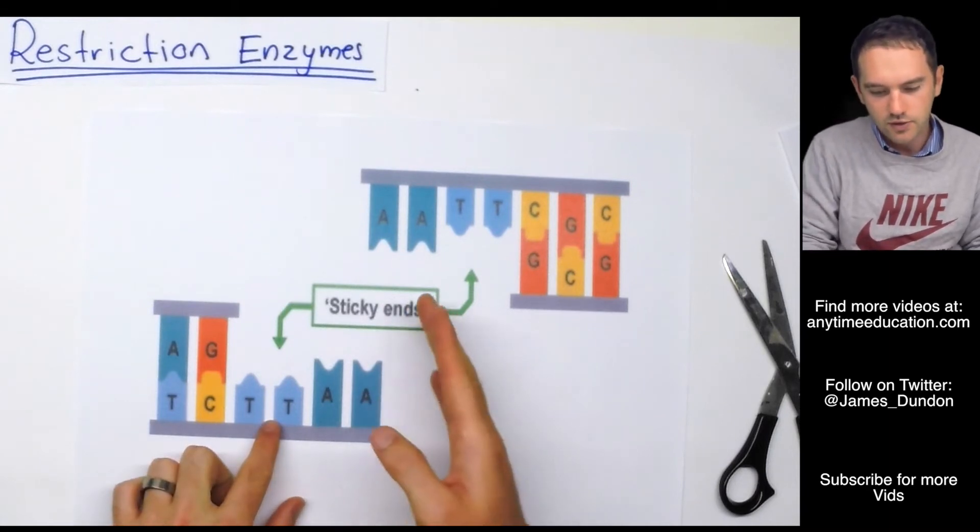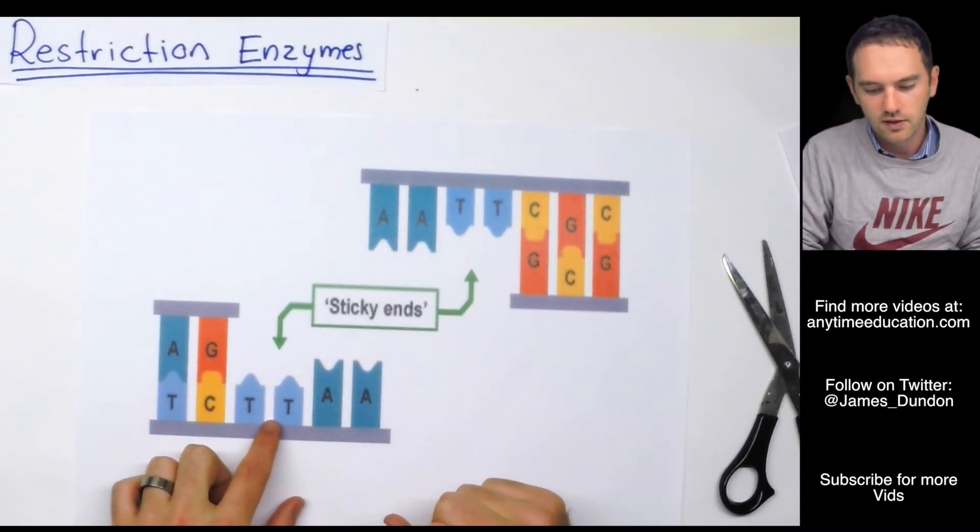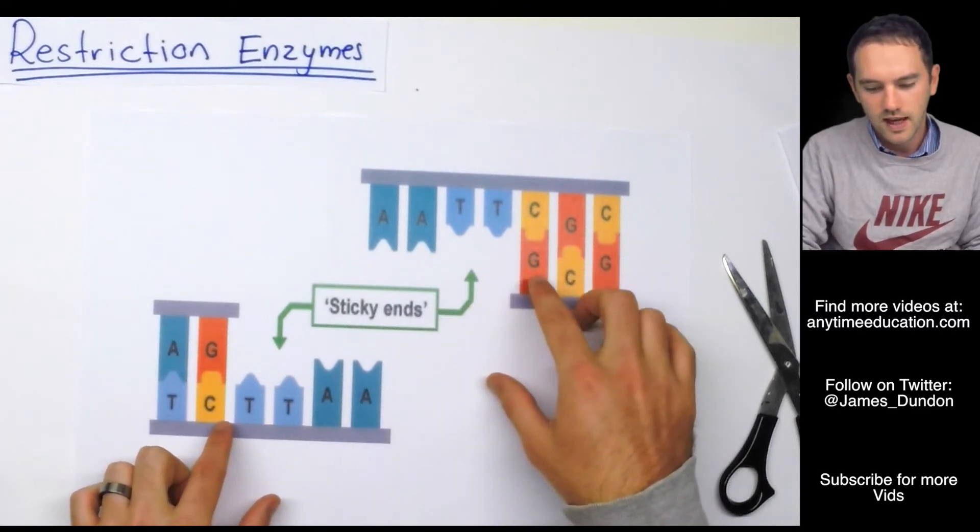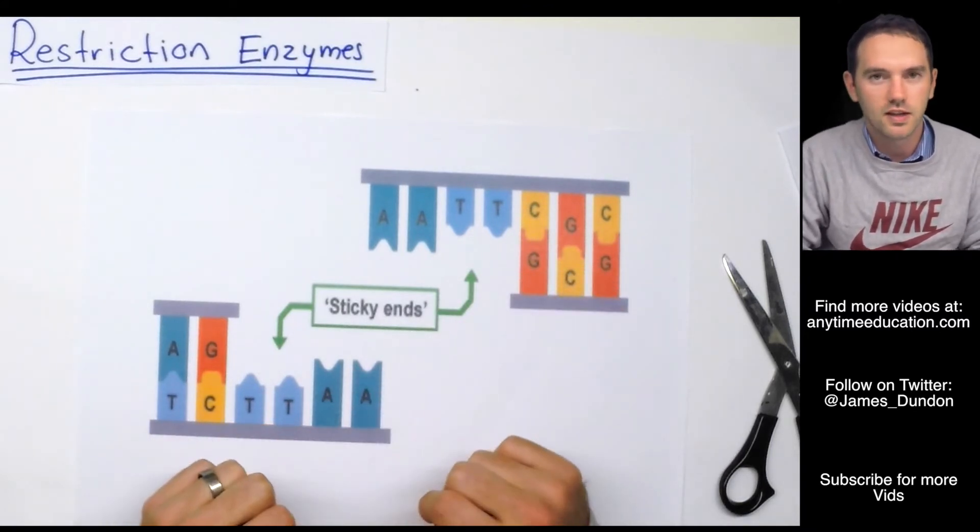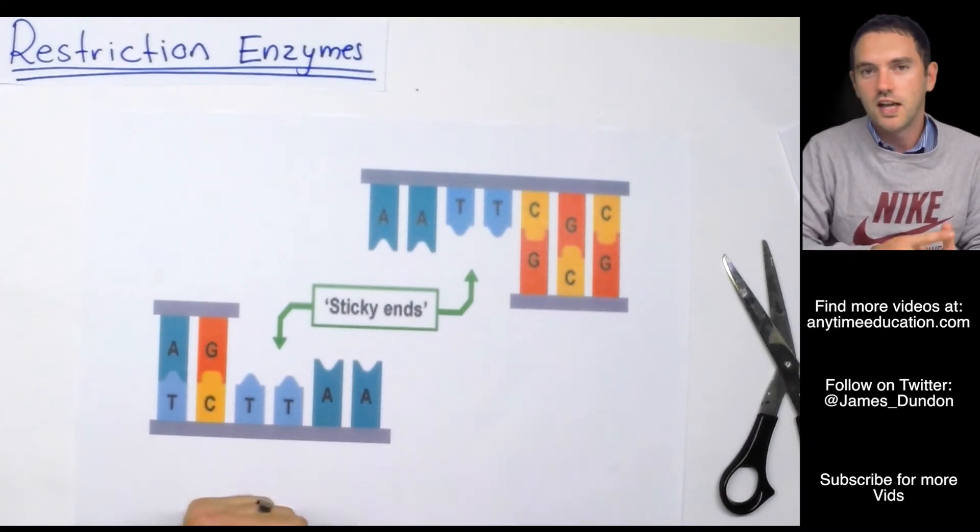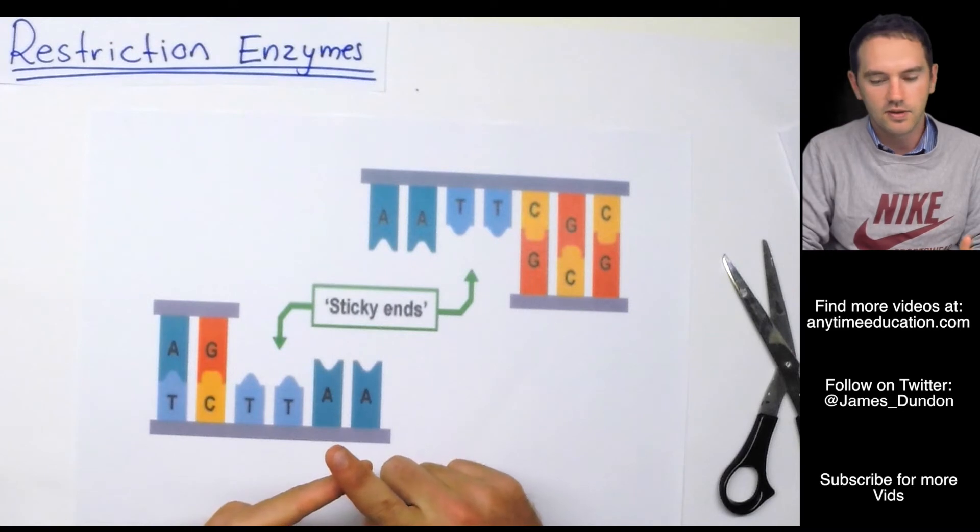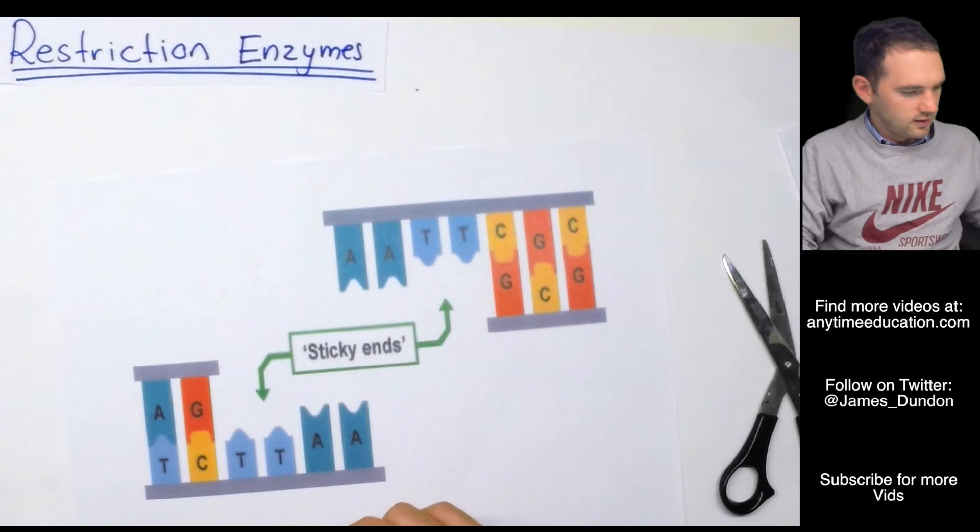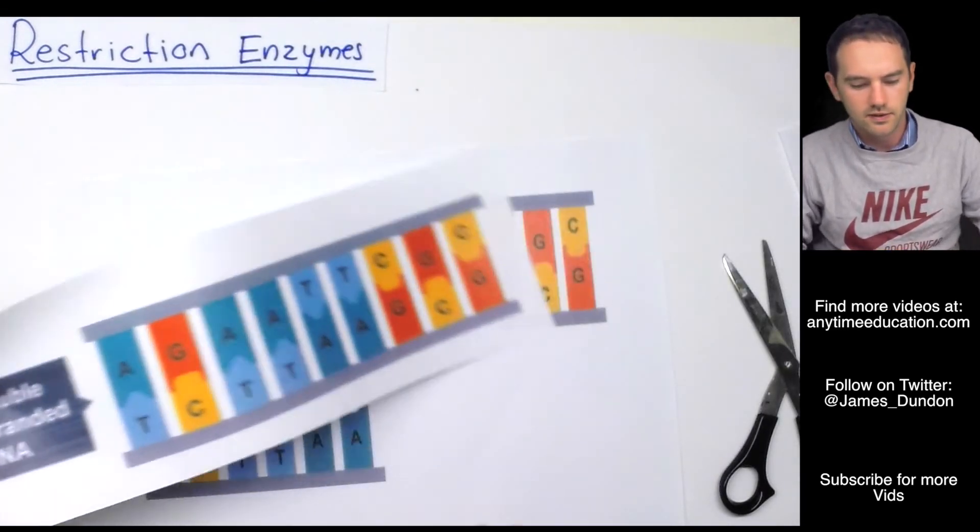This one, as you'll notice, leaves these two sticky ends. So you'll understand that if we have these two sticky ends, they might then be able to rebind to each other. And geneticists have actually utilized that in genetic cloning and DNA fingerprinting. And we'll have a look at that later. So sticky ends or blunt ends.